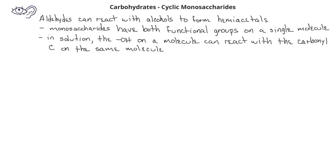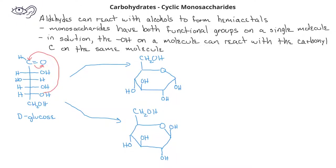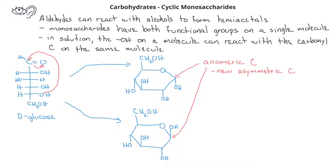In this case, we see that the hydroxyl group on carbon number 5 can form an association with the carbonyl carbon. As a result, we get two different cyclic monosaccharides. Their structures will be almost identical. The difference will be at carbon number 1, which we call the anomeric carbon — a new asymmetric carbon that used to be the carbonyl carbon.